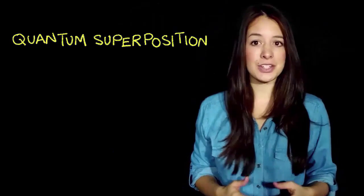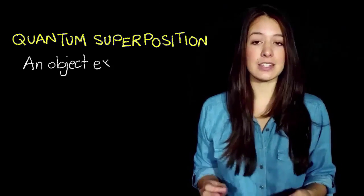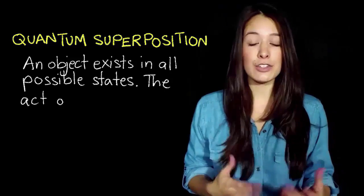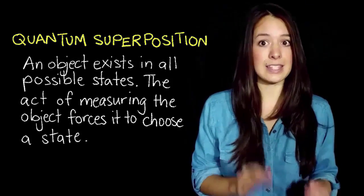To understand this, we need to talk a little bit about something called quantum superposition. Quantum superposition is the theory that an object exists in all possible states at the same time, and the act of measuring that object forces it to choose one state.